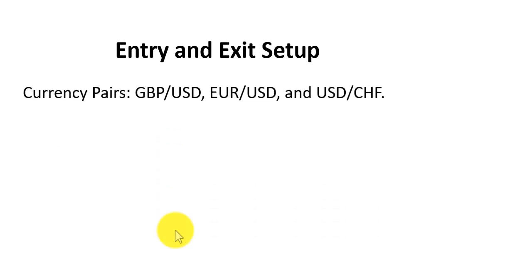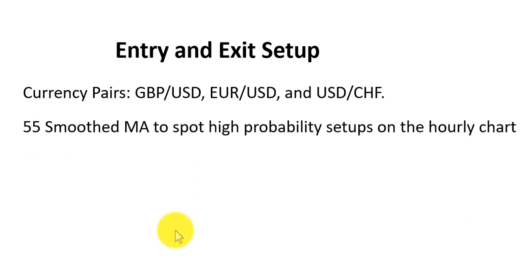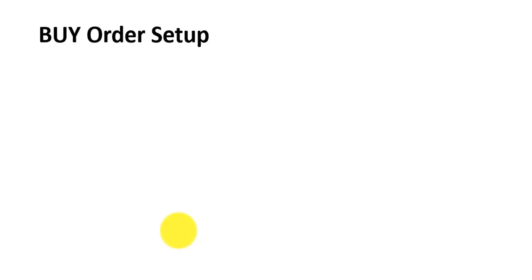Now, how do we set the entry and the exit? I will give you specific rules that you can use to enter and exit the market, and then you can continue to use them as often as you like. First, let's discuss what pairs we can trade. These are the three pairs we can trade. For today's lesson, we will use USD/Swiss Franc as an example. We only use one indicator, which is the moving average — specifically a 55-period smooth moving average.